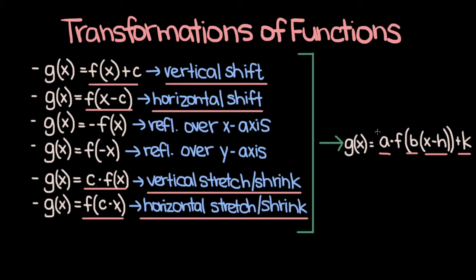If a is negative, then we're reflecting over the x-axis, and if b is negative, then we're reflecting over the y-axis.